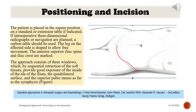Positioning and incision: the patient is placed in the supine position on a standard or extension table if indicated. If intraoperative three-dimensional radiographs or navigation are planned, a carbon table should be used. The leg on the affected side is draped to allow free movement. The anterior superior iliac spine and iliac crest are marked. The approach consists of three windows which, by sequential retraction of the soft tissues, provide good exposure of the inside of the ala of the ilium, the quadrilateral surface, and the superior pubic ramus as far as the symphysis.